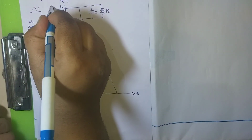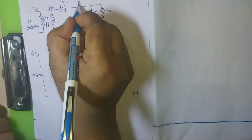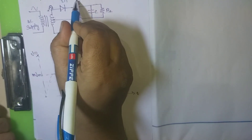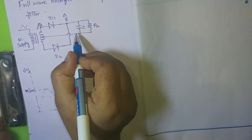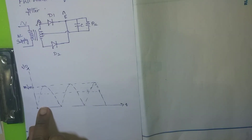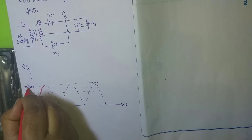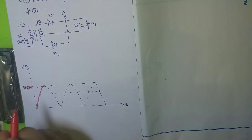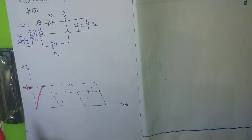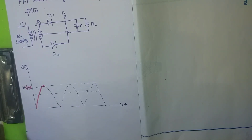When there is a positive peak at point E, this positive voltage makes the capacitor charge. In the very first cycle, the capacitor starts charging, following the sinusoidal signal until it reaches the maximum point Vm. Once it reaches Vm, the sinusoidal signal starts to decrease, and the capacitor also begins discharging — but the capacitor discharges more slowly than the signal.